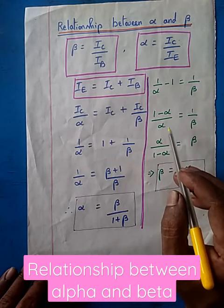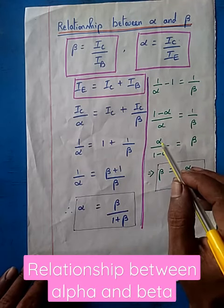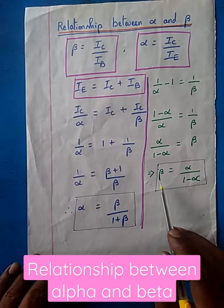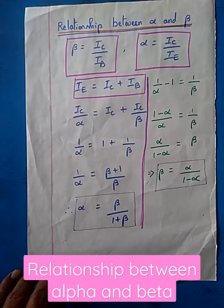Taking the LCM, 1 minus alpha by alpha equals 1 by beta. Alpha by 1 minus alpha equals beta. Therefore, beta equals alpha divided by 1 minus alpha. Thank you.